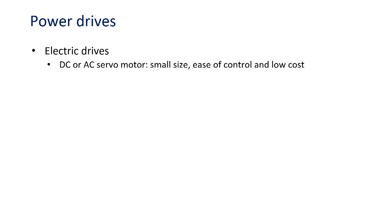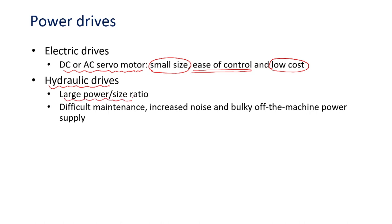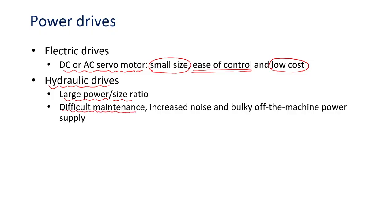Based upon electrical drives we can classify CNC machines using AC or DC servo motors. Electrical drives are small in size, easy to control, easy to handle, and low in cost. Hydraulic drives have a very large power-to-size ratio and are used in the shop floor for CNC-controlled operations, but they are difficult to maintain, have a lot of noise, and have a bulky structure. Such systems are rarely used in laser-based applications. Pneumatic drives are used for auxiliary purposes such as cleaning or actuating operations like tool changing in CNC-based machining.